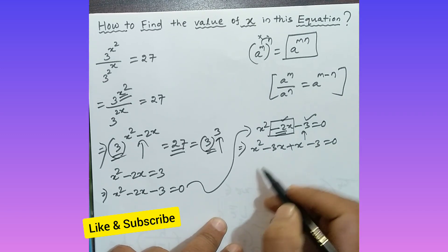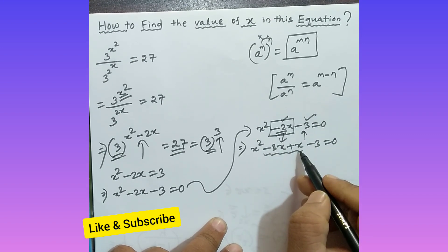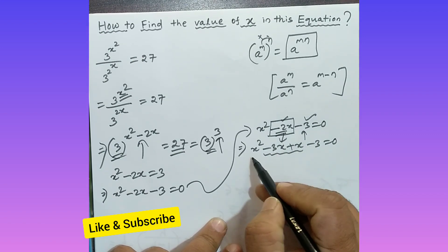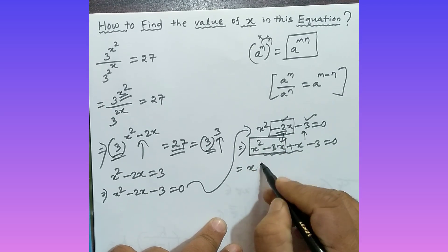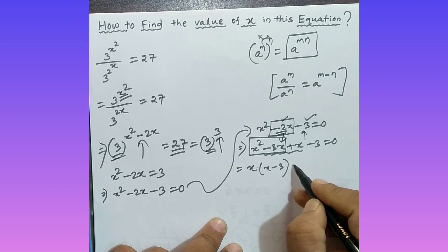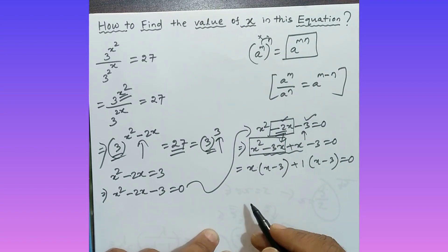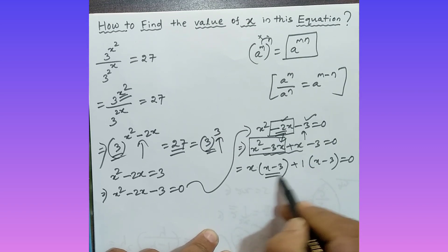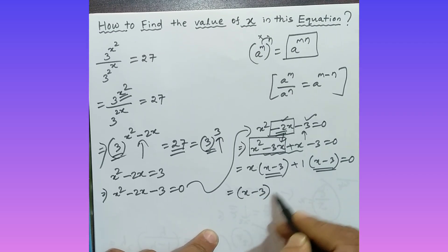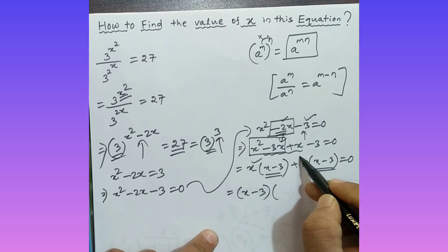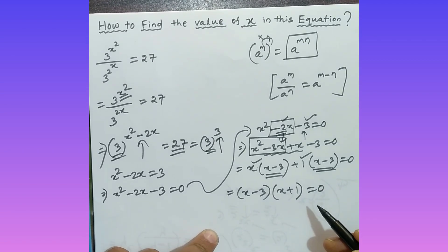Splitting the middle term using minus 3 and plus 1: x squared minus 3x plus x minus 3 equals zero. Taking x common from the first two terms gives x times (x minus 3), and taking 1 common from the last two gives 1 times (x minus 3). So we have (x minus 3)(x plus 1) equals zero.